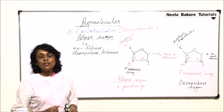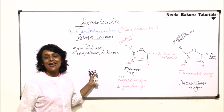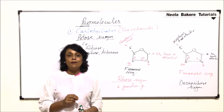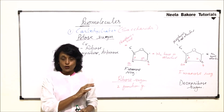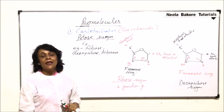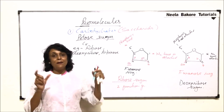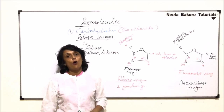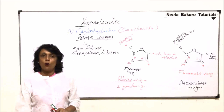So those are the two important pentose sugars. We have now covered monosaccharides — both hexose sugars and pentose sugars in detail. In the next part we will take up disaccharides, discussing how two monosaccharides join to form a disaccharide, and then oligosaccharide molecules.